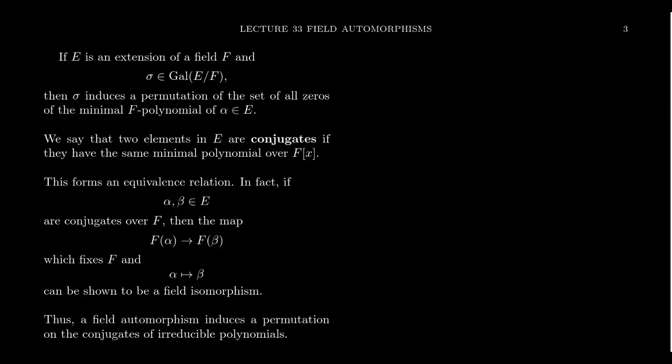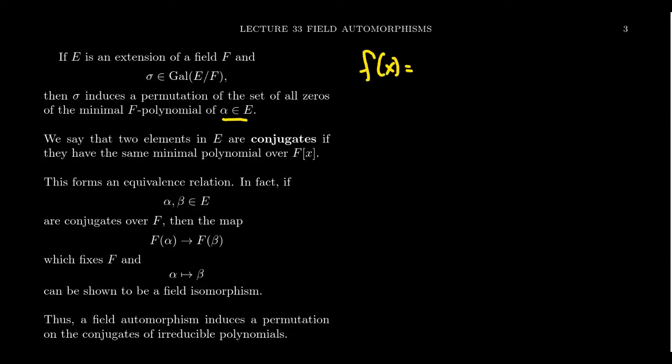It can be shown that sigma induces a permutation on the set of zeros — the set of roots of the minimal polynomial with F coefficients — for any element alpha. This sigma has to induce an automorphism there. To see why, let's take our element alpha that belongs to E and let's take its minimal polynomial. Let's call that polynomial F of X, which has coefficients that belong to F.